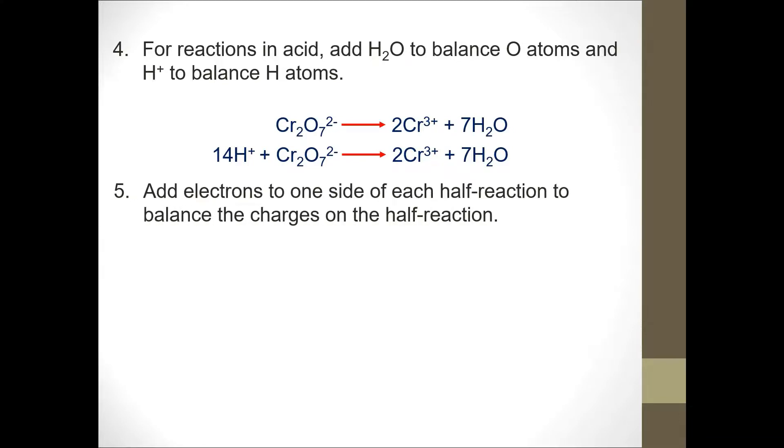Next, we add electrons to one side of each half reaction to balance the charges. For ferrum, we add 1 electron to Fe3+. This will make the charge balance. On the left, 2+. On the right, 2+.